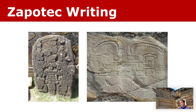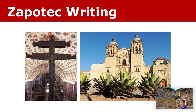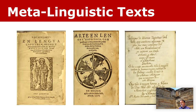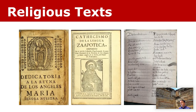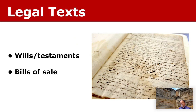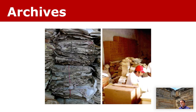Here we see some text of the long tradition of Zapotec literacy — this is hieroglyphic writing. Alphabetic writing began with the arrival of the Spanish Empire in Mexico. The earliest document we have written in Zapotec in alphabetic form is from 1565. The texts written during the colonial period include metalinguistic documents like dictionaries and grammars, many religious texts, as well as various legal texts. These documents are often stored in archives where the conditions can be extremely variable.